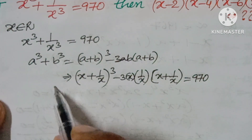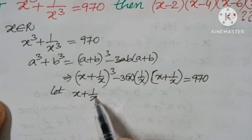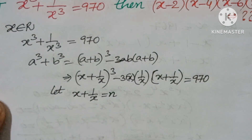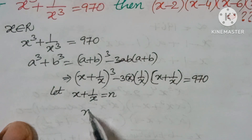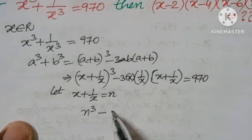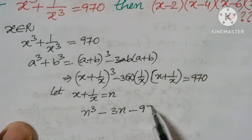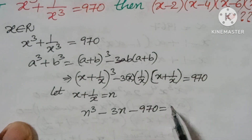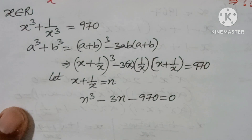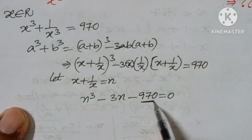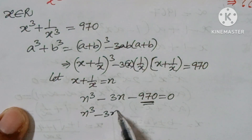Let us take x + 1/x = n. So we get n³ − 3n − 970 = 0.